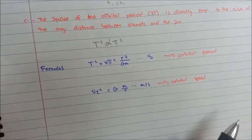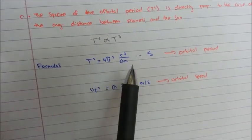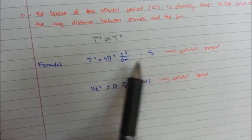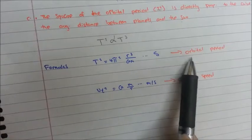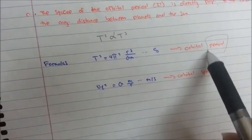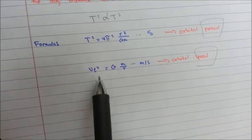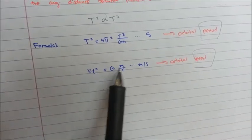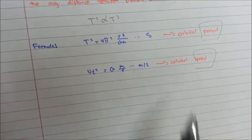The two formulas we'll be using in this lesson: T squared equals 4π² r cubed over GM, with the unit of seconds — use this when asked for the orbital period. The second formula is Vt squared equals GM over R, with the unit of meters per second — use this when asked for the orbital speed.